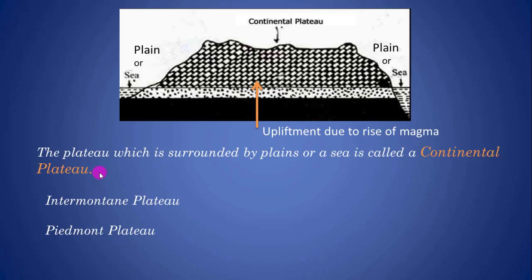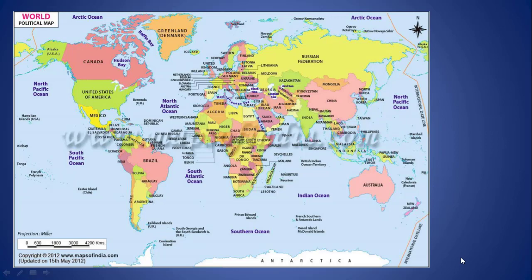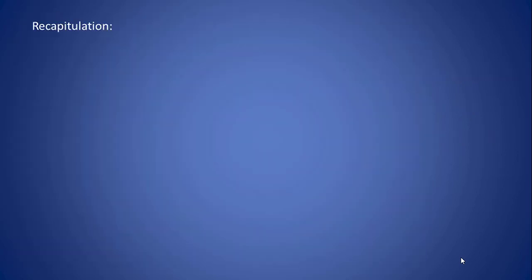So the plateau which is surrounded by plains or a sea is called a continental plateau. Unlike the intermontane plateau and the piedmont plateau which are located near mountains, the continental plateaus are surrounded on all sides by either plains or seas. Saudi Arabia, Spain, and Greenland are examples of continental plateaus.